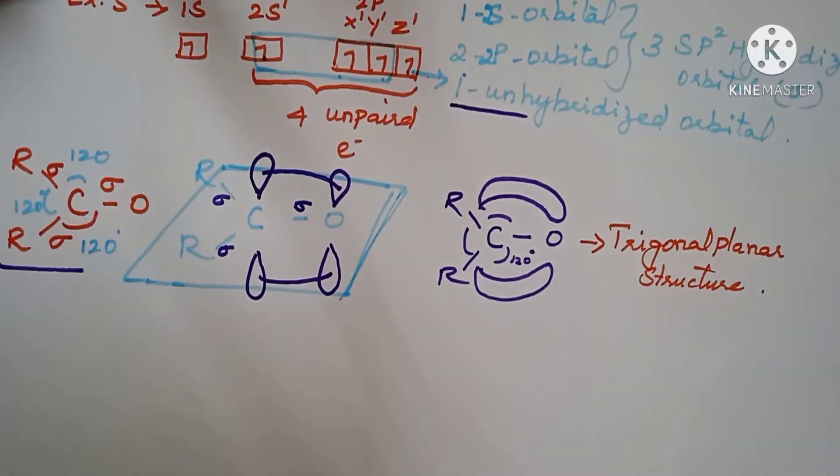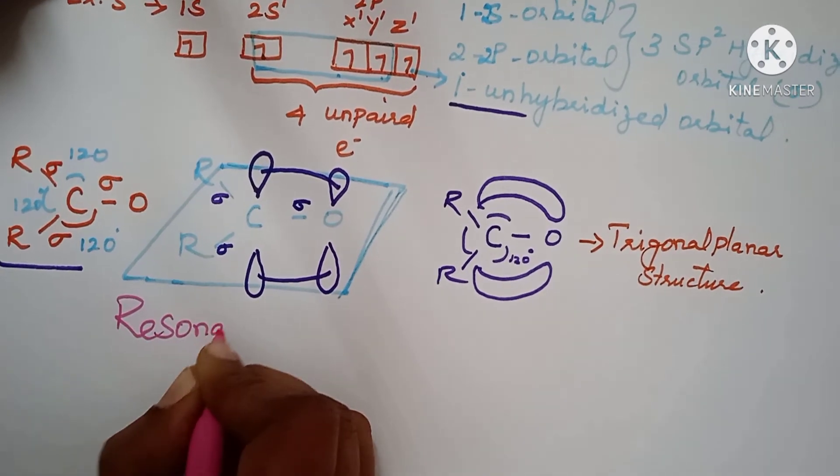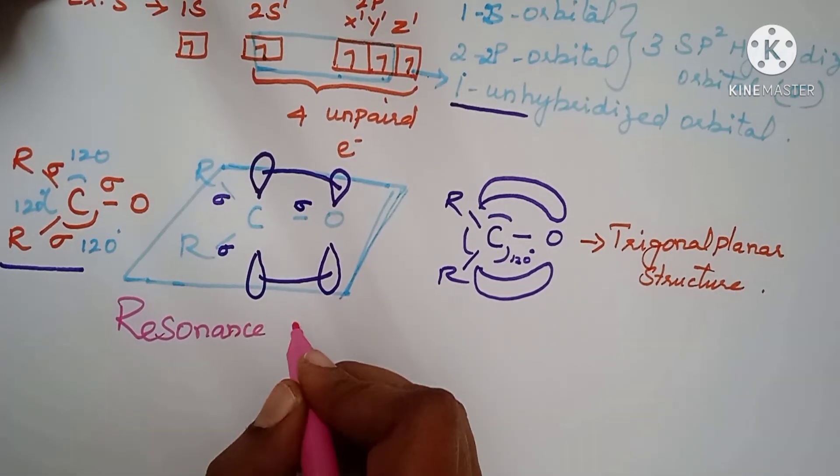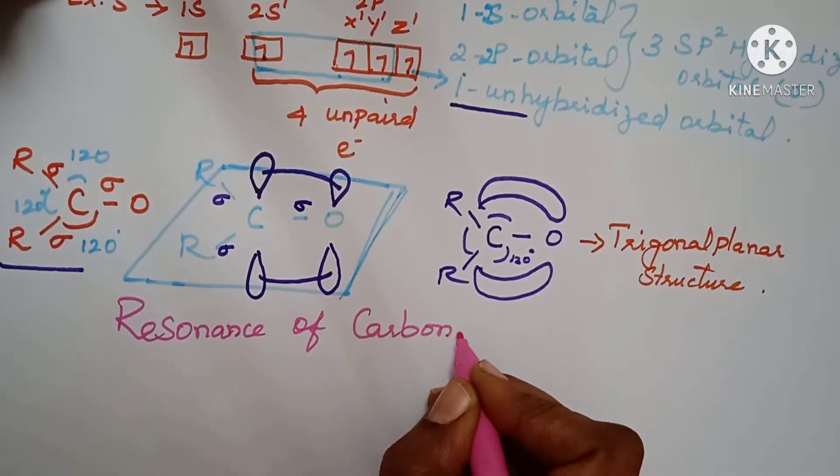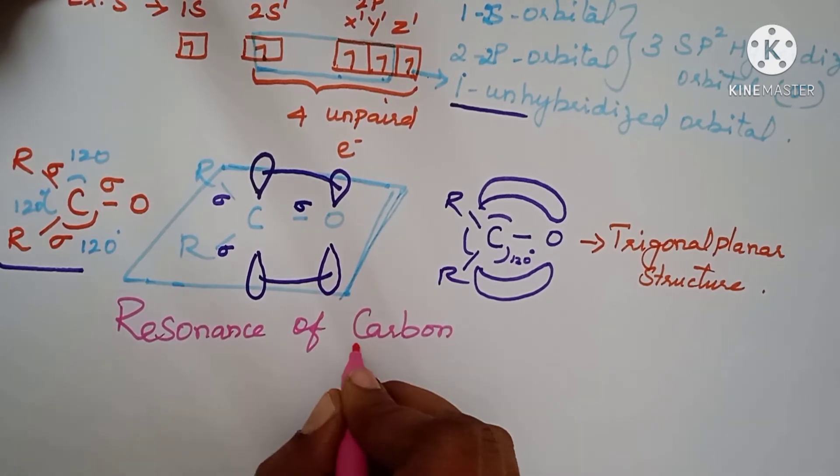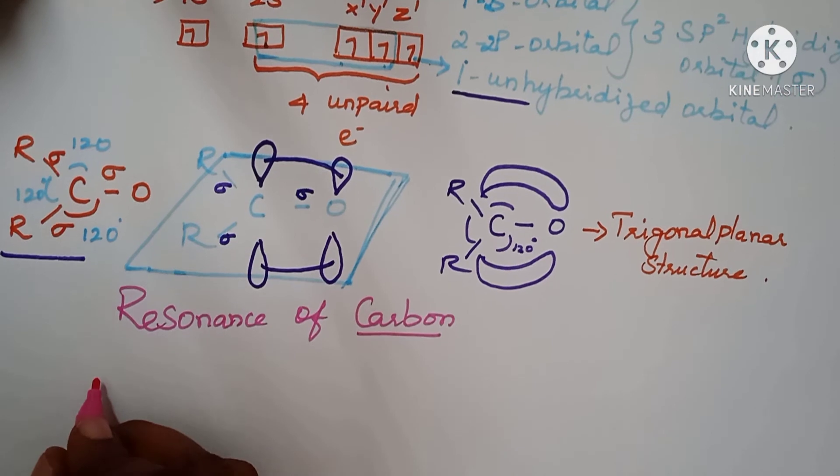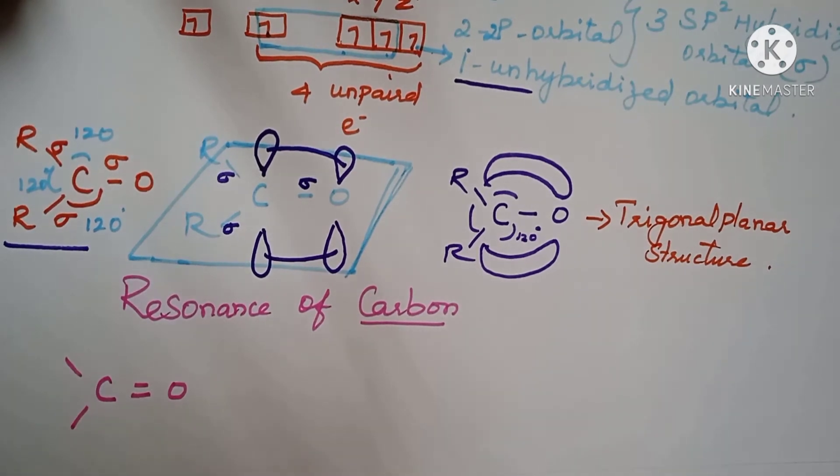Now, another part, we are going to see the resonance of carbon. Resonance of carbon means, this is carbonyl, carbonyl compound only. Here, I mentioned carbon. See, carbon attached with oxygen by a double bond along with these bonds. Now, what happens?